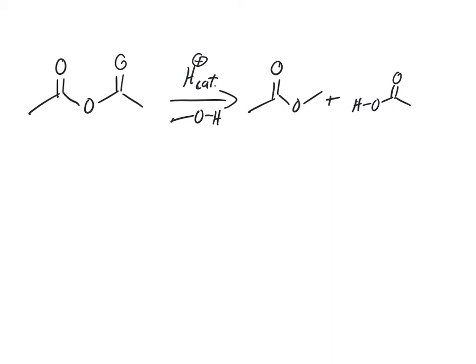Let's take a look here where we have an anhydride. We're starting with an anhydride and going to an ester. We're going down Mount Carbonyl from something more reactive with a better leaving group to something less reactive with a not as good leaving group. So what's going to happen here?